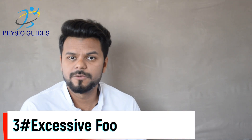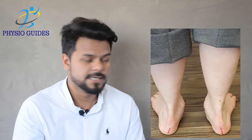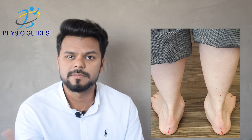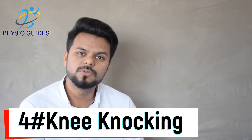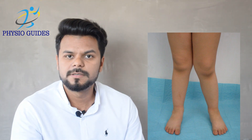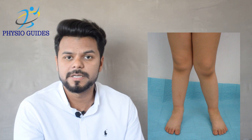The third cause is excessive foot pronation. Excessive foot pronation means the foot rolls inward excessively. The next cause is knee knocking. Knee knocking is related to the Q angle — it does not allow the knee to align properly. The knee alignment is disturbed, and as a result, the patella dislocates.